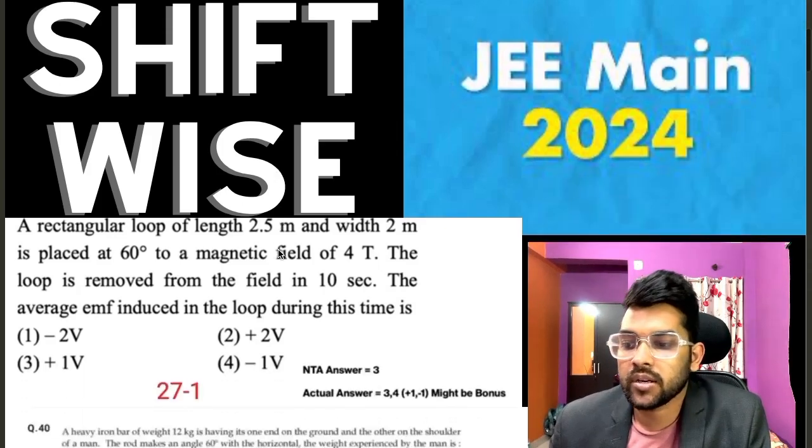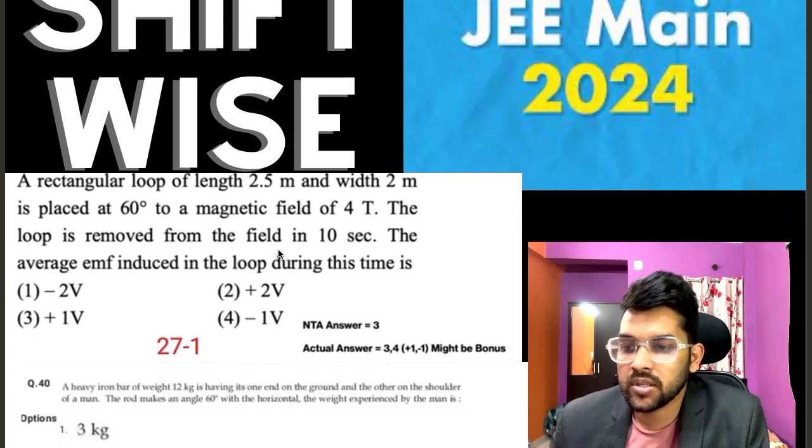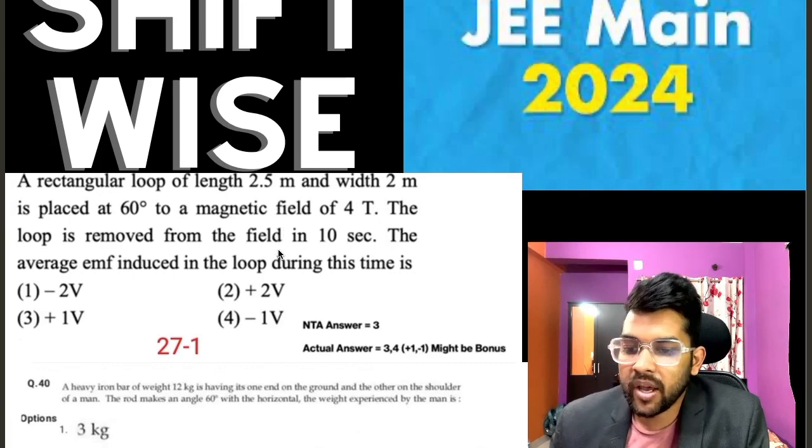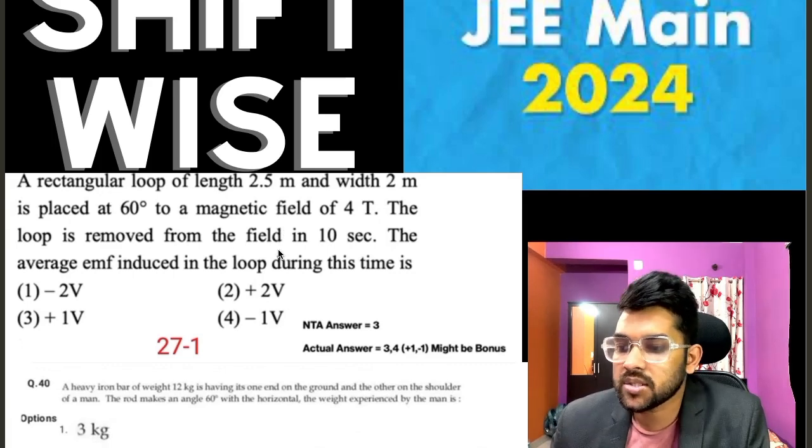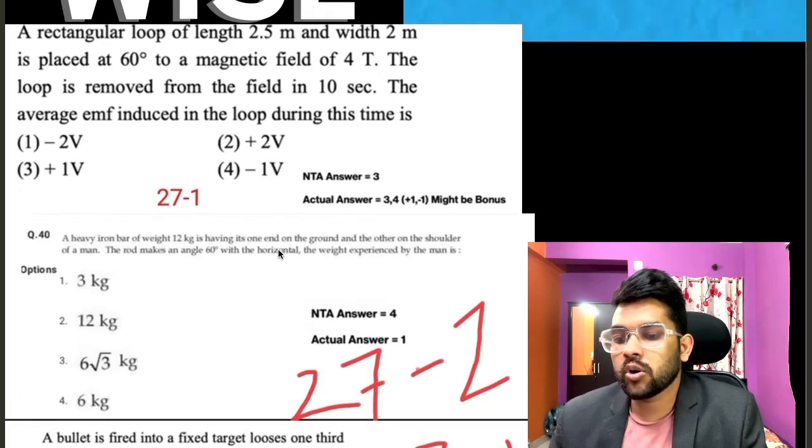So first of all, if you go for 27 first, there is a question that is from physics. So official answer by NTA is 3, but actual answer will be 3 and 4, that is C and D both, because plus 1 and minus 1 both is correct.